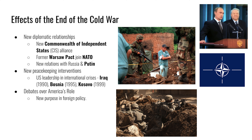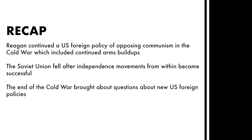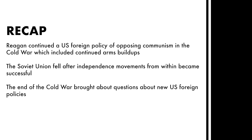The rest of the world is less happy when the US acts unilaterally. Once the war on terror started in 2001 and the Iraq War in 2003, US foreign policy became more unilateral, causing the US to lose popularity around the world. In recap: Reagan continued a US foreign policy of opposing communism in the Cold War, which included continued arms buildup — comparable to how previous presidents led with the containment policy. The Soviet Union fell after independence movements from within became successful. The end of the Cold War raised new questions about US foreign policy going forward.